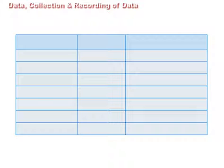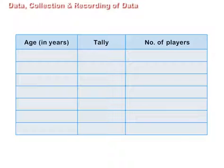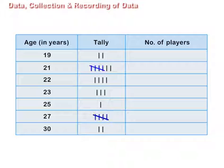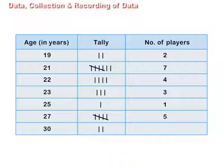He draws three columns and writes age in years, tally vertical bar, and number of players. Now he reads the ages one by one and draws one tally in the tally column against the age read. If a number occurs five times, he crosses the four tallies already drawn by a slash like this. Thus, four tallies crossed by a slash stands for five members. Then he counts the tallies and writes the numbers in the last column headed by number of players.